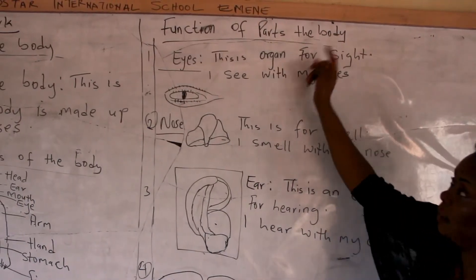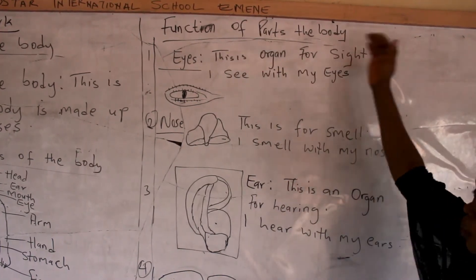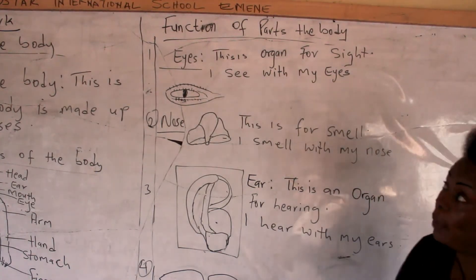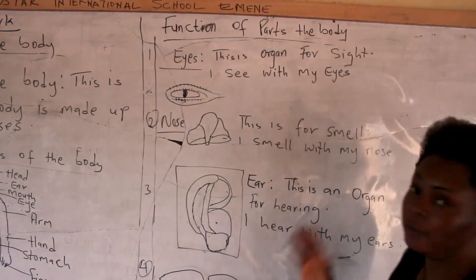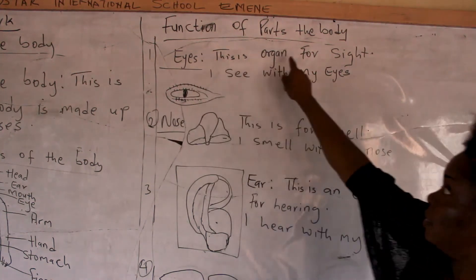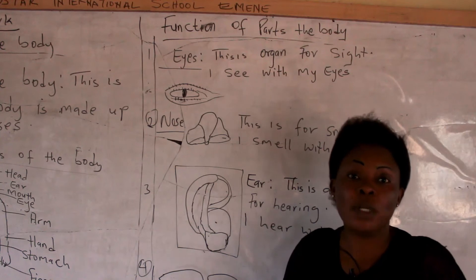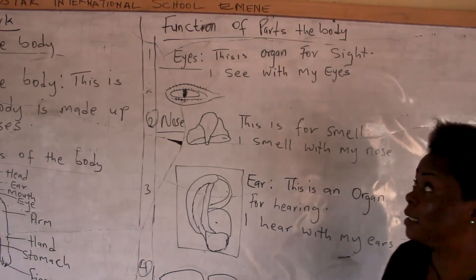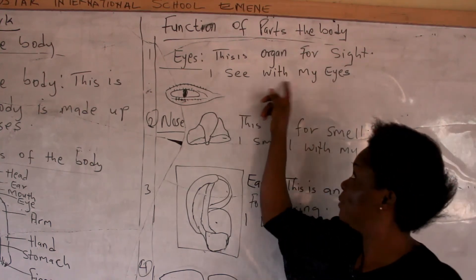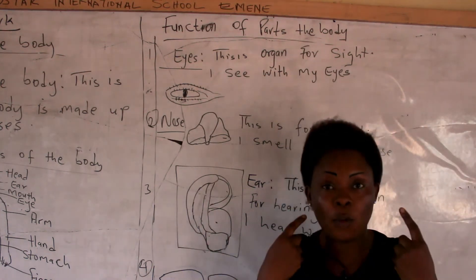Functions of the parts of the body. When you talk of functions of the parts of the body, you talk of what the body does — that is the work of the parts of the body. Number one, you have eyes. This is the organ for sight. We use eyes to see. Children, repeat after me: I see with my eyes. Eyes is for sight.